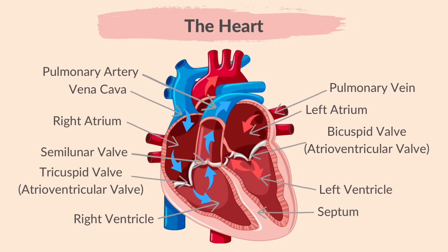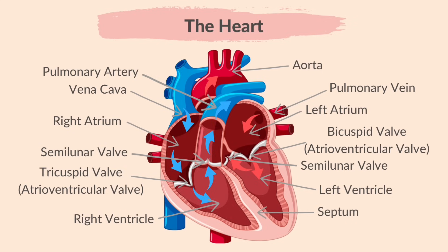This is the left ventricle, a chamber of the heart. This is the semilunar valve in the aorta — it prevents blood flowing backwards into the heart. The thicker muscle walls of the ventricle contract strongly to push the blood forcefully through the semilunar valve into the aorta. The aorta is a blood vessel that carries oxygenated blood away from the heart all the way around the body.